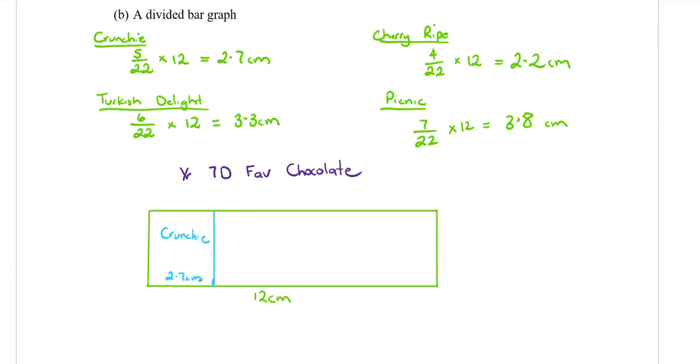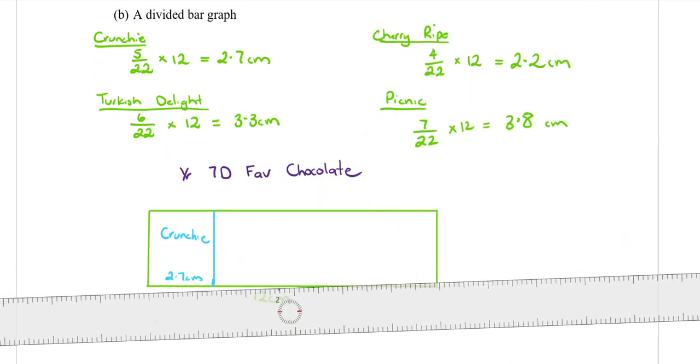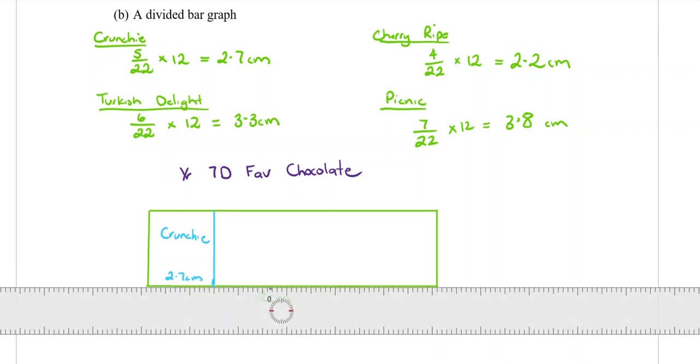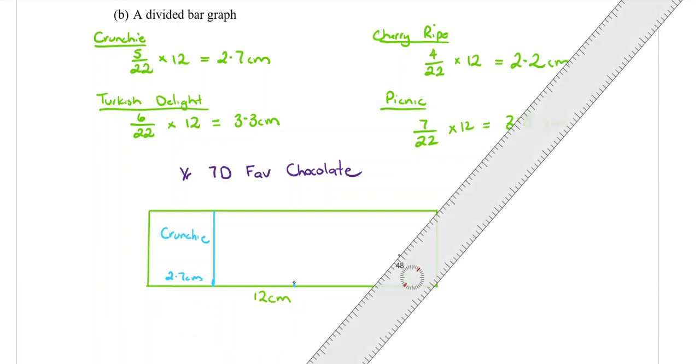Then move your ruler along. You're going to slide it along so that your zero is starting here and you're going to measure your next one, which is the Turkish Delight, 3.3. So 3.3 for me is there.